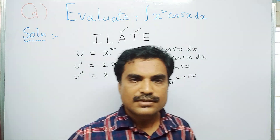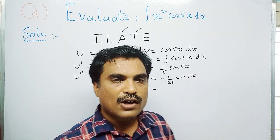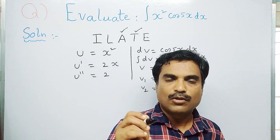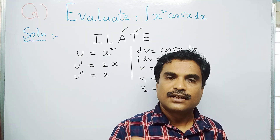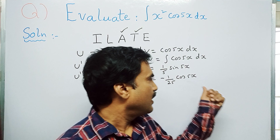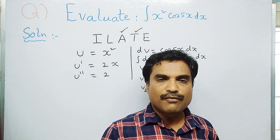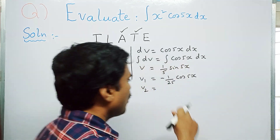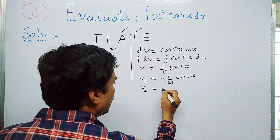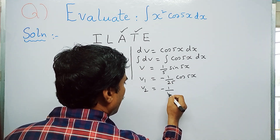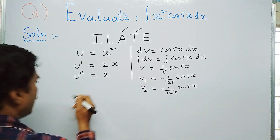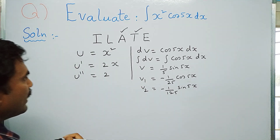Integrating once more to get v₂: applying ∫cos(ax) dx = (1/a)sin(ax) with a = 5 and the existing factor −1/25, we get v₂ = −(1/125)sin 5x.